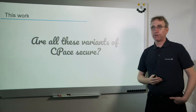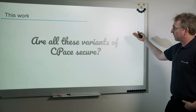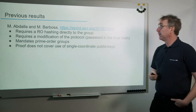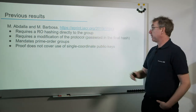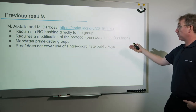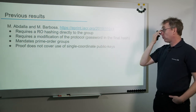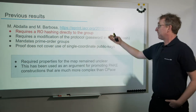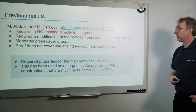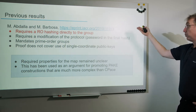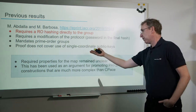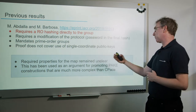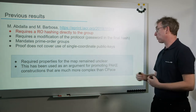The question our work addresses is whether these variants are actually secure. There are previous results by Abdallah and Barbosa which analyzed CPACE. They required a random oracle directly hashing to the group, a modification of the protocol with the password in the final hash, and they mandated prime-order groups. Their proof did not consider single-coordinate public keys. The required properties of the mapping algorithm remained unclear, and this was used as an argument for promoting PAKE constructions far more complex than CPACE.